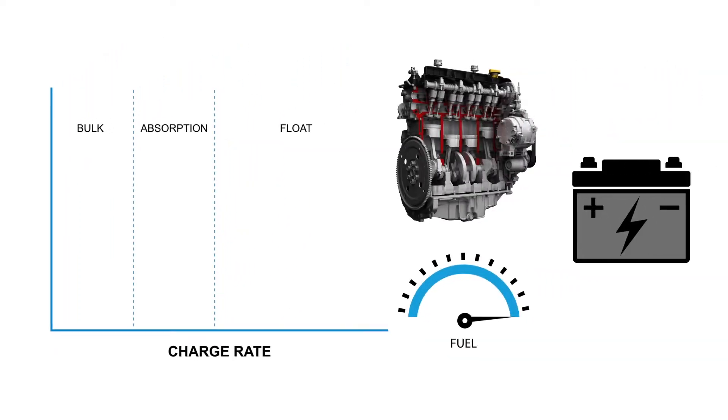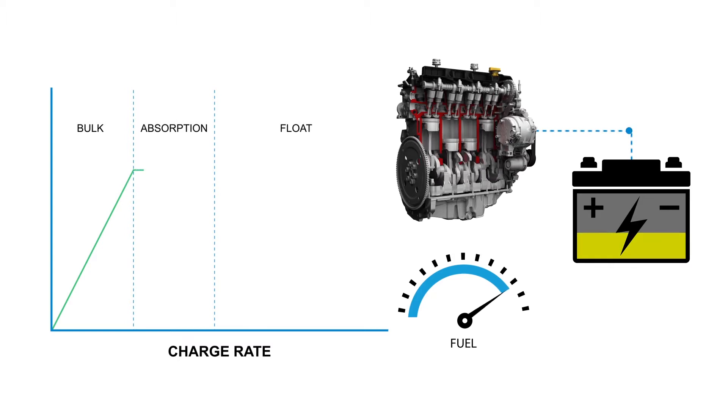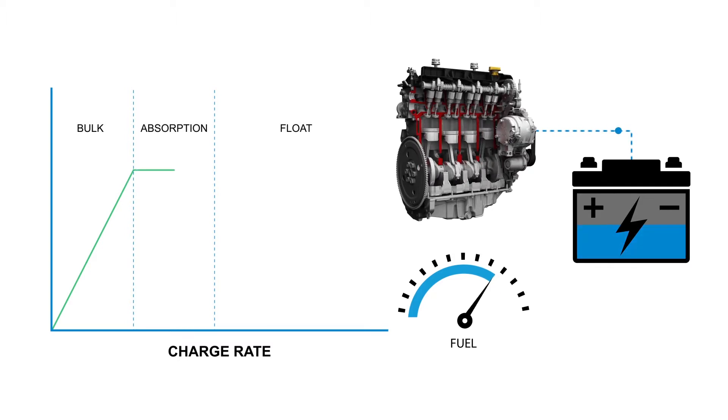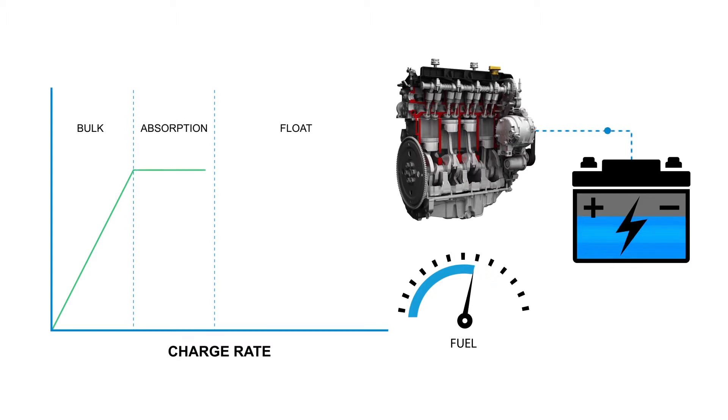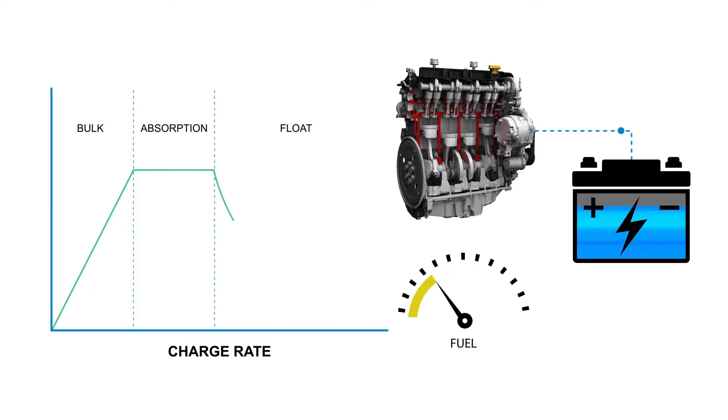Alternators are frequently used to recharge batteries and are great at bulk charging with a high current output, but as the battery is charging and gets to be 80 to 90 percent full, the alternator charge current slows down dramatically and turns into an absorption charge.